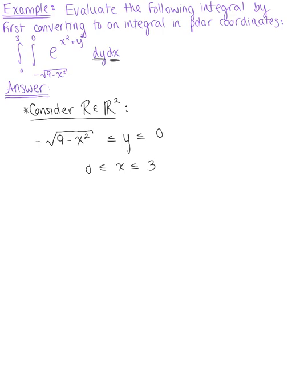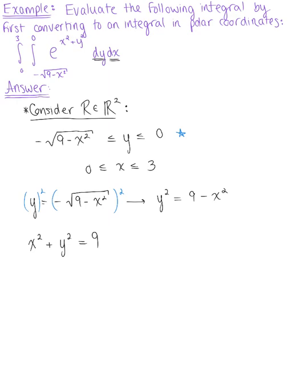Looking at the bounds on y, we can see that the lower bound is equal to minus the square root of 9 minus x squared. Converting this to something more familiar — by squaring both sides, we get y squared equals 9 minus x squared. Bringing all terms to one side: x squared plus y squared equals 9. This is a circle centered at the origin with a radius of 3.